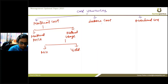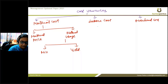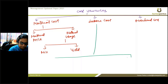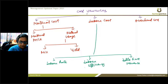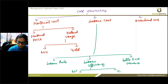For labor cost variance, we have labor rate variance, labor efficiency variance, and idle time variance. Under labor efficiency, similar to material usage, this can be divided into mix and yield variances.